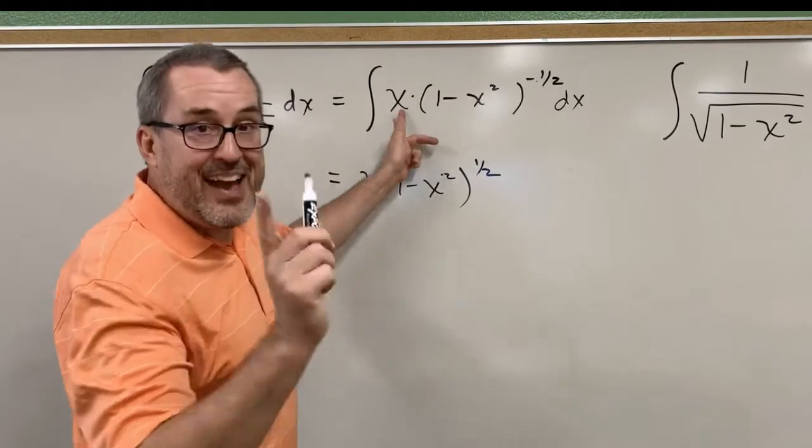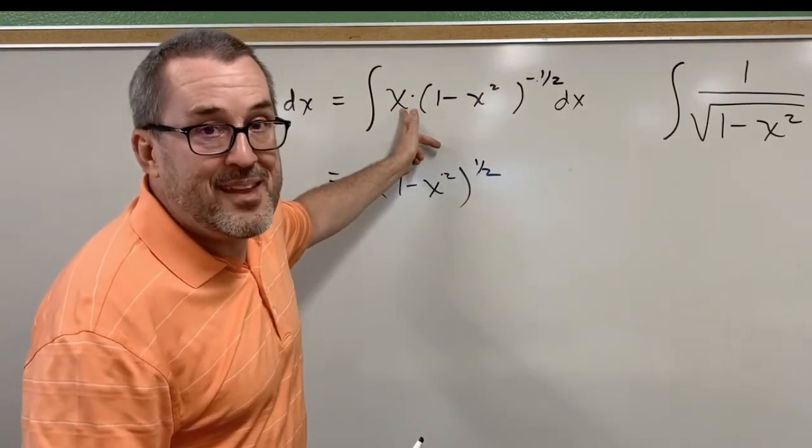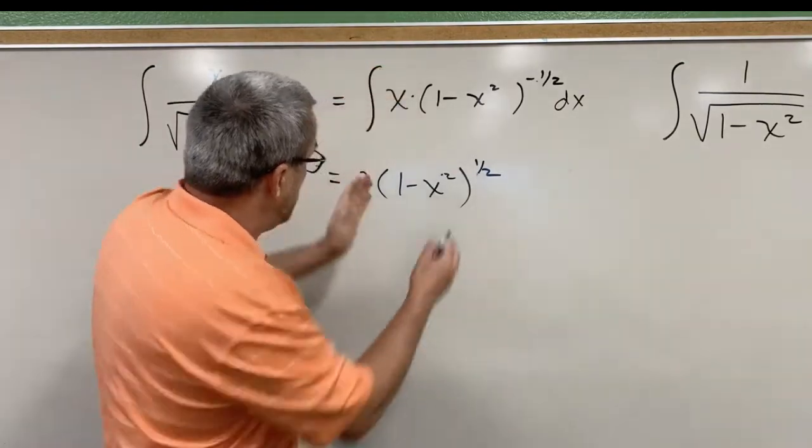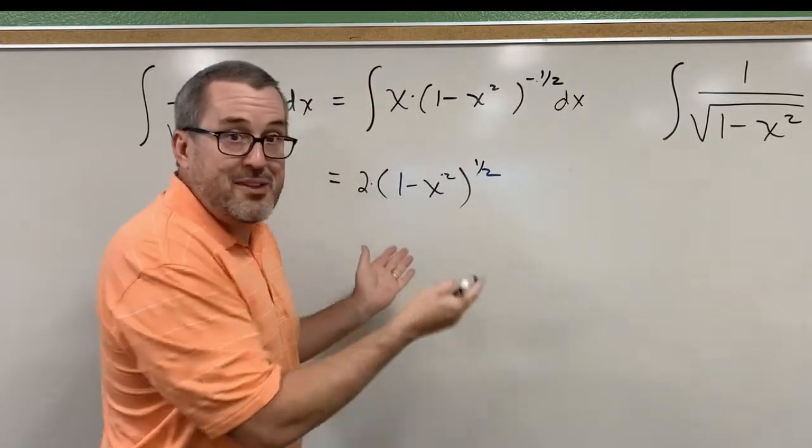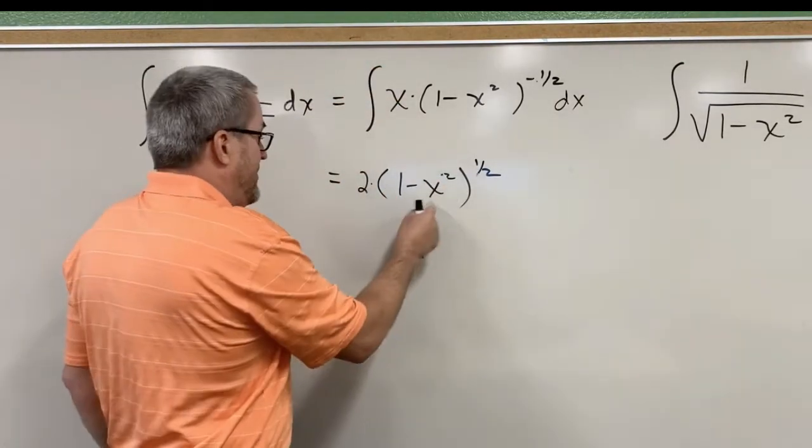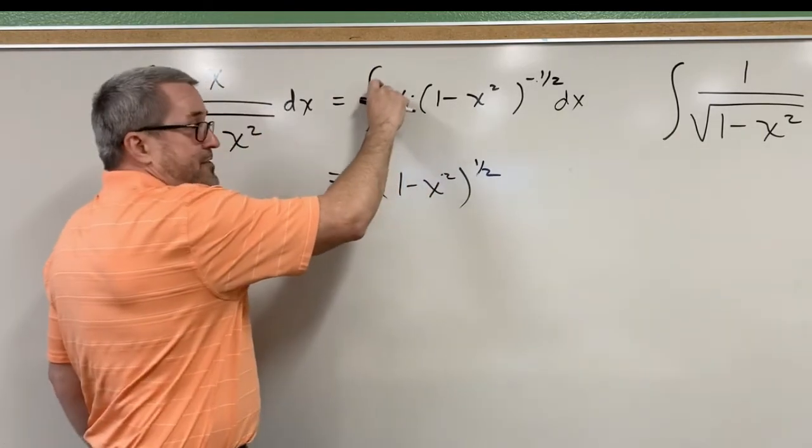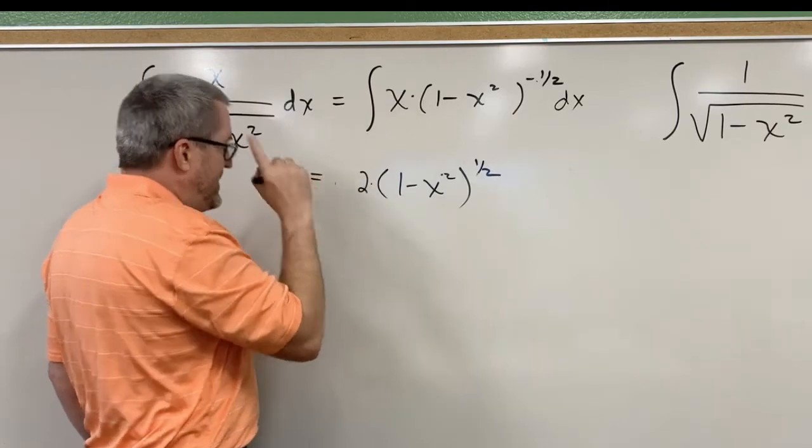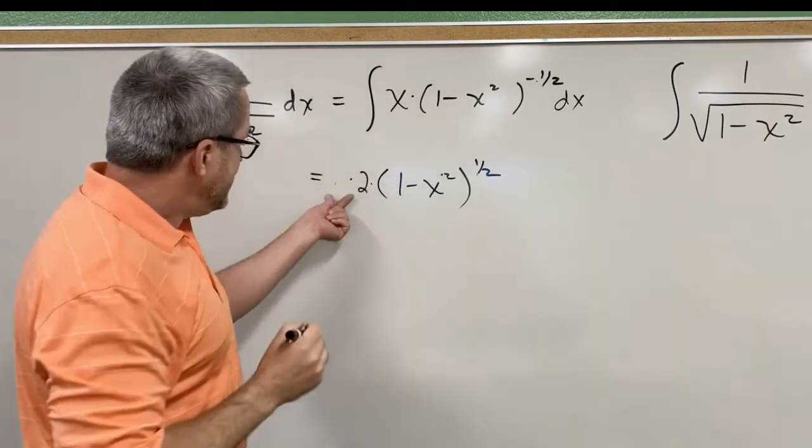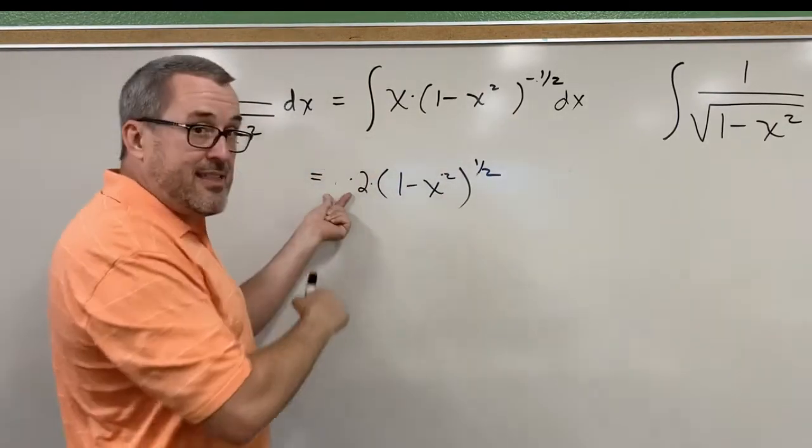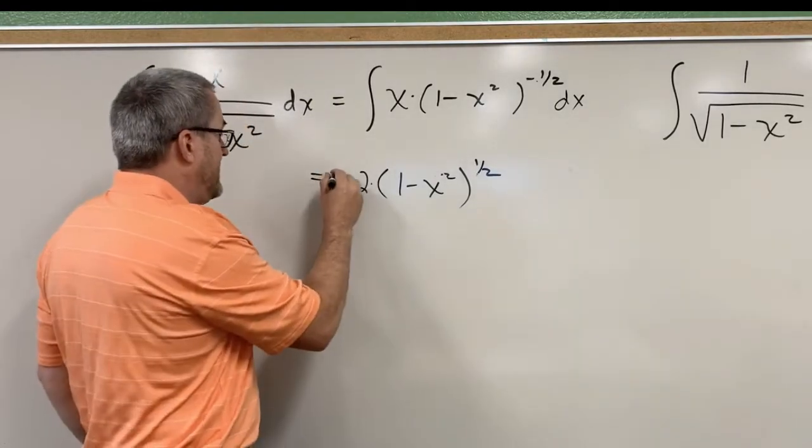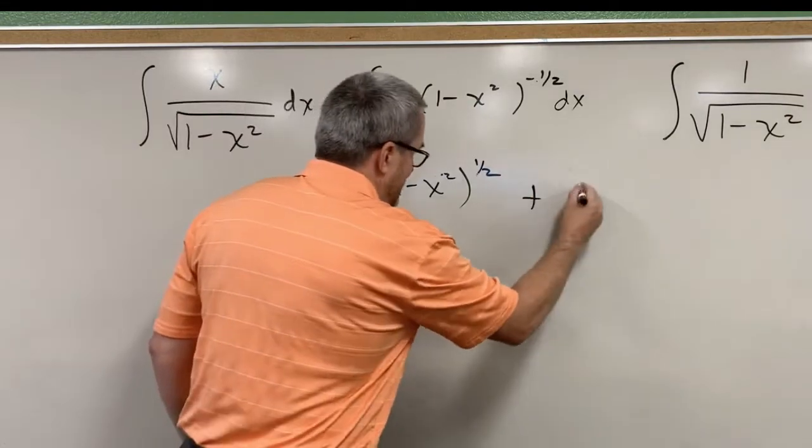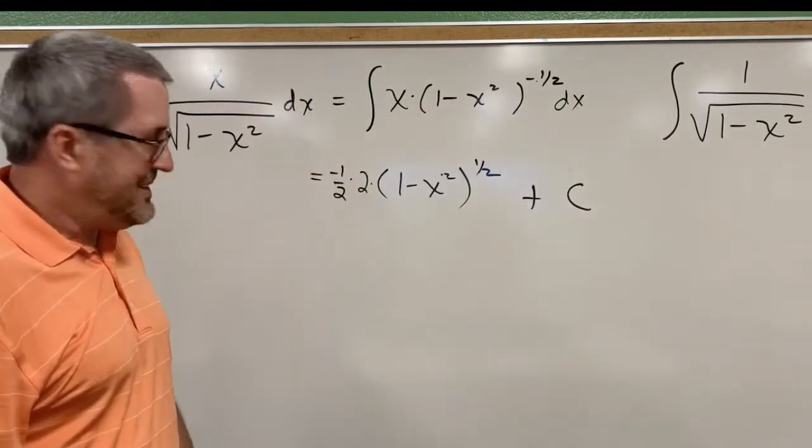Secondly, by the chain rule, after the one-half comes out front and gets decreased by one, the chain rule would require that I take the derivative of this binomial. And the derivative of this binomial would be negative 2x. Ah, that's where that x came from. It's at least partially the derivative of that binomial by the chain rule. But the derivative would be negative 2x. Notice the factor or the coefficient of negative 2 is not there, and so we have to think about what must have been here to eliminate that factor of negative 2. Well, a negative one-half.